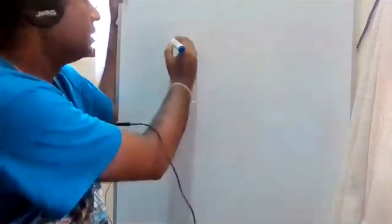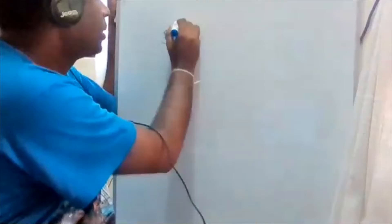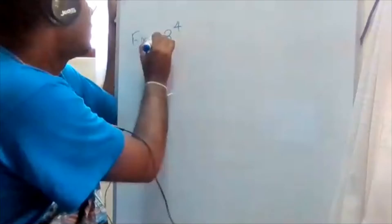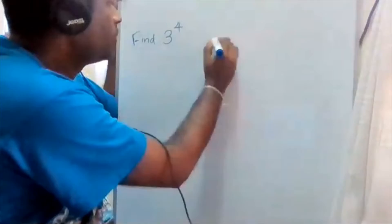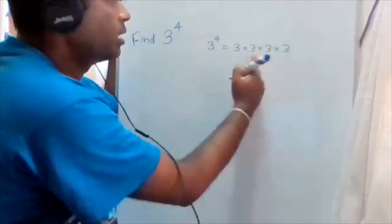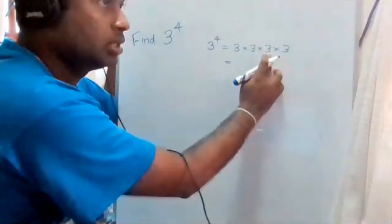Hello, today we are going to discuss some important theories in maths. Let's discuss indices. You know that if you have three to the power of four, you have to find its value. Three to the power four is three times three times three times three — four threes. Three times three is nine, nine times three is twenty-seven, twenty-seven times three is eighty-one.